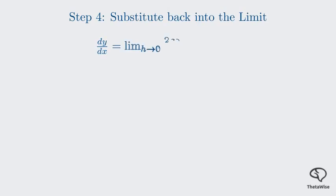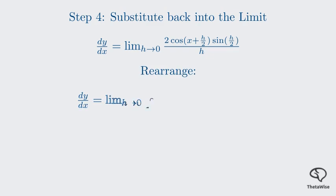Now we can substitute this simplified expression back into our limit definition. Our derivative becomes the limit as h approaches 0 of 2 times cosine(x+h/2) times sine(h/2), all divided by h. We can rearrange this term to make use of a famous trigonometric limit. We can split the expression into a product of two limits. This gives us the limit of cosine(x+h/2) times the limit of sine(h/2) over (h/2). Notice I've split the 2 and the h from the denominator to create the h/2 term we need.